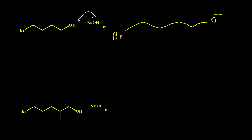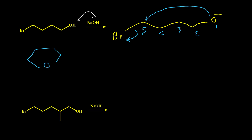This alkoxide anion can then undergo an internal SN2 reaction and kick bromine out of the structure. To track the atoms, I number them — we are going to get a ring with five atoms, with atom number one being oxygen. By this reaction we can synthesize THF, or tetrahydrofuran, a very famous solvent in organic chemistry.